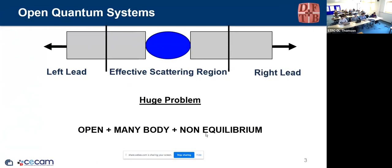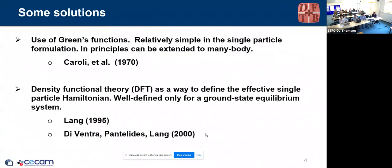The problem we have to solve is in fact a huge problem. We have an open system — in general I sketch it with two contacts, but even one extended lead would be an open system. If you have two or more contacts you can drive it out of equilibrium, and it brings the many-body problem where electrons interact with phonons, photons, and everything.